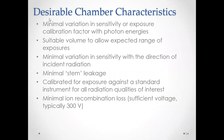Desired chamber characteristics include: minimal variation in sensitivity or exposure calibration factors with photon energies; suitable volume to allow the expected range of exposures; minimal variation in sensitivity with the direction of incident radiation; minimal stem leakage; calibration against a standard instrument for all radiation quantities of interest; and minimal ion recombination loss — ensuring sufficient voltage so that all created ions are counted.